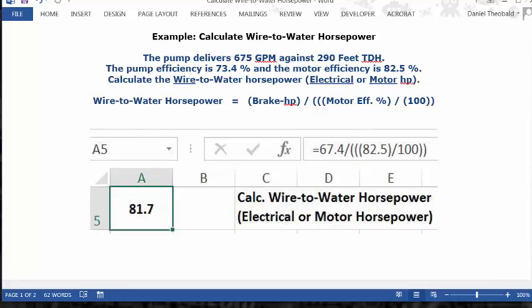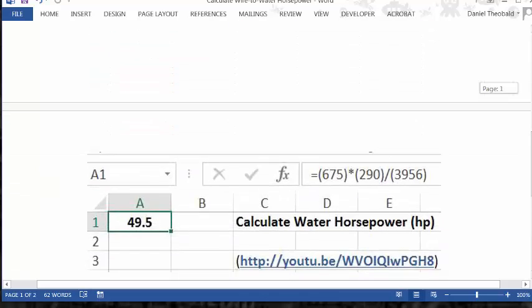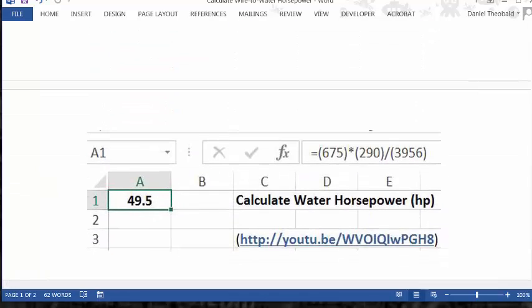Now let's look and see how we calculate brake horsepower, that 67.4. We'll look at this first video because brake horsepower uses water horsepower, so we have to calculate water horsepower first in order to calculate the brake horsepower.